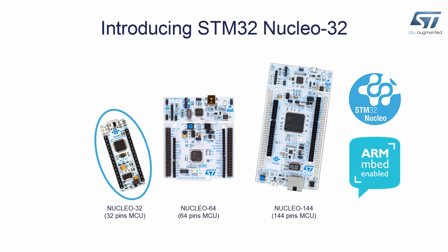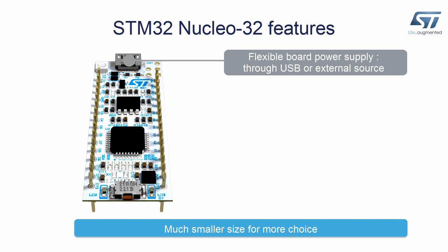STM32 Nucleo boards are available with various microcontroller footprints: 32 pins, 64 pins, or 144 pins. STM32 Nucleo boards include Arduino Nano connectors. Nucleo 64 and Nucleo 144 include Arduino Uno Revision 3 and ST Morpho connectors. These boards are ARM Mbed enabled. The power supply is provided either by the host PC through the USB cable or by an external source.